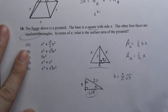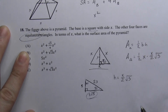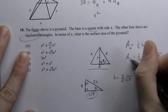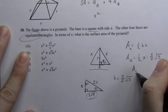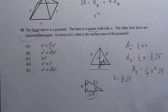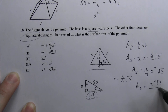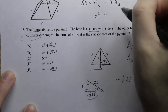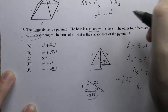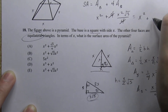Now let's simplify. The area of one triangular side equals 1/4 x² times √3, or x²√3 over 4. We have four of those sides, so the total surface area is x² plus 4 times (x²√3 over 4). The 4s cancel out, leaving us with x² plus x²√3.